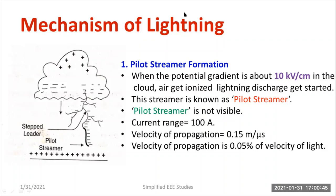There are four mechanisms of lightning. The first mechanism is pilot streamer formation. The second is stepped leader formation. The third is return streamer formation. And finally, dart leader formation. These are the four basic mechanisms of lightning.